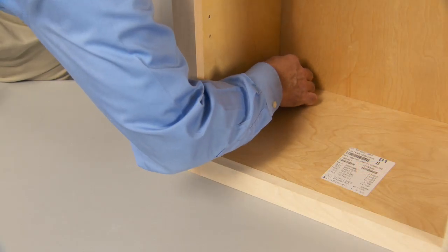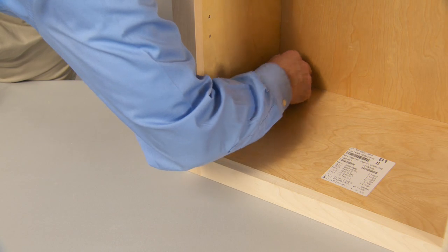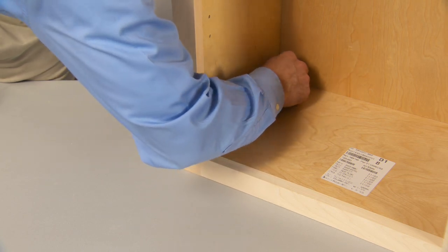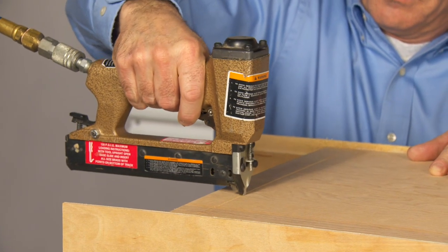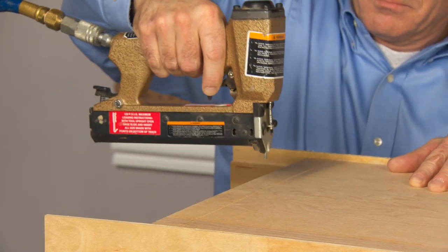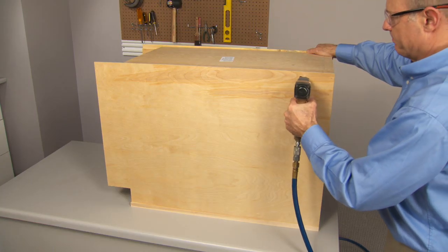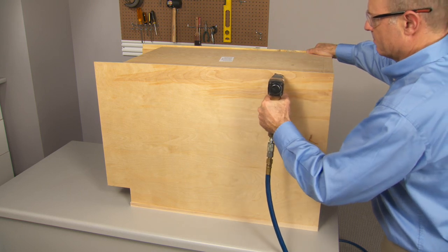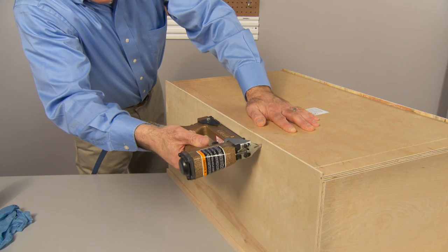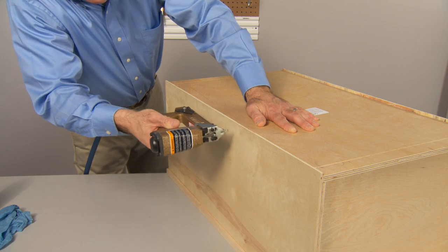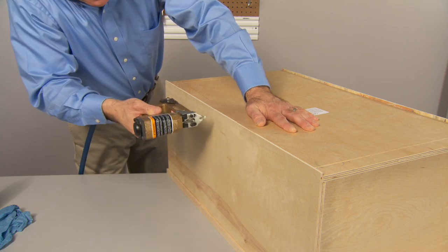After you've finished assembling a cabinet, use a damp cloth to wipe away any excess glue. Pins or staples are used to fasten the back to the sides, top, and bottom. If a side will be unexposed in the finished kitchen, pin through the sides into the back. If sides are exposed or flush, toenail the back to sides.